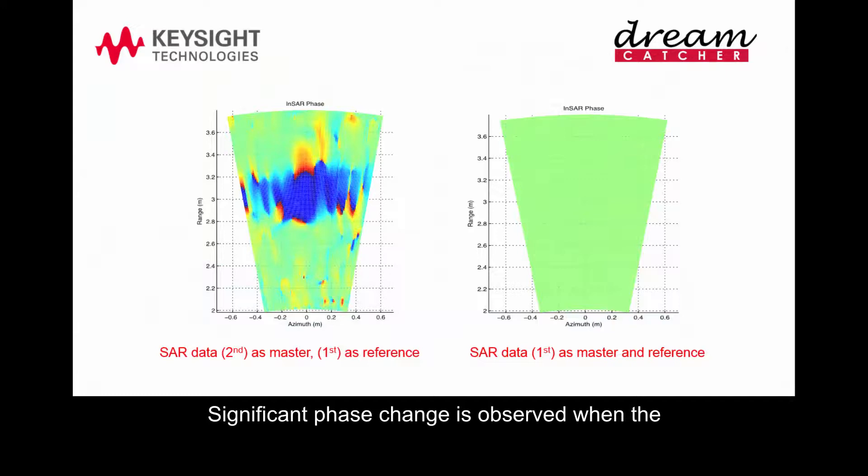Significant phase changes are observed when the target is placed at a slightly different position. The phase change is due to the two-way range difference from the SAR antenna to the target. When there is no displacement, for example for the case master image equals reference image, the phase change is zero.